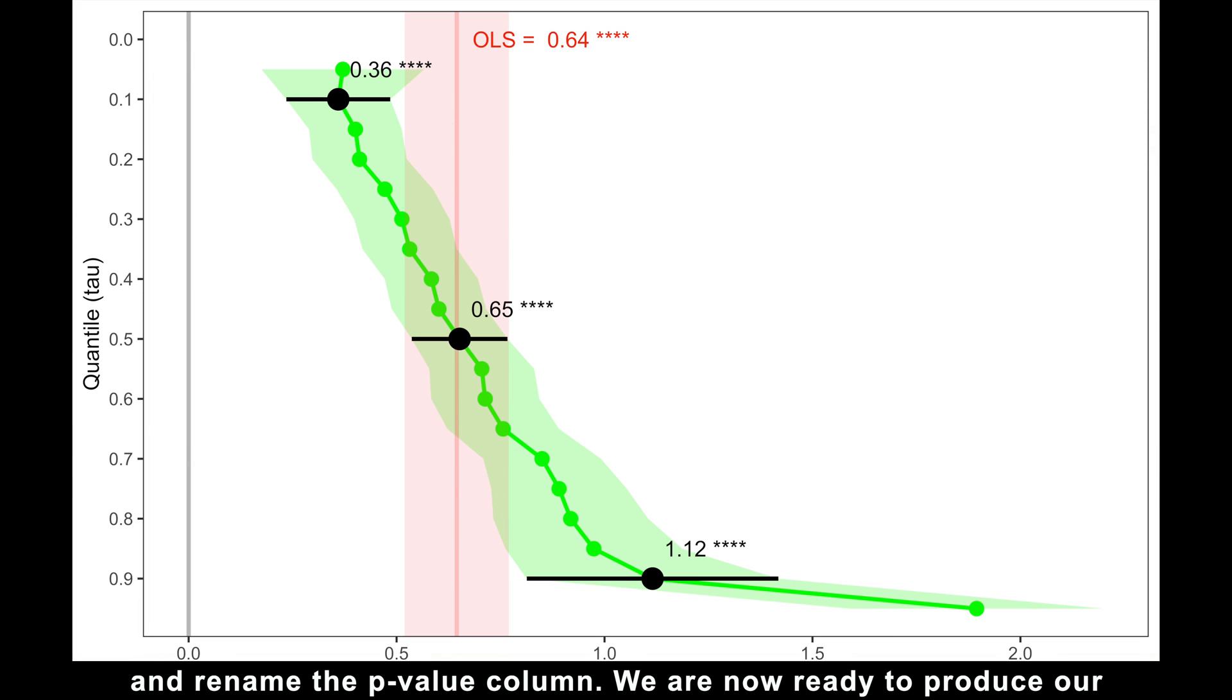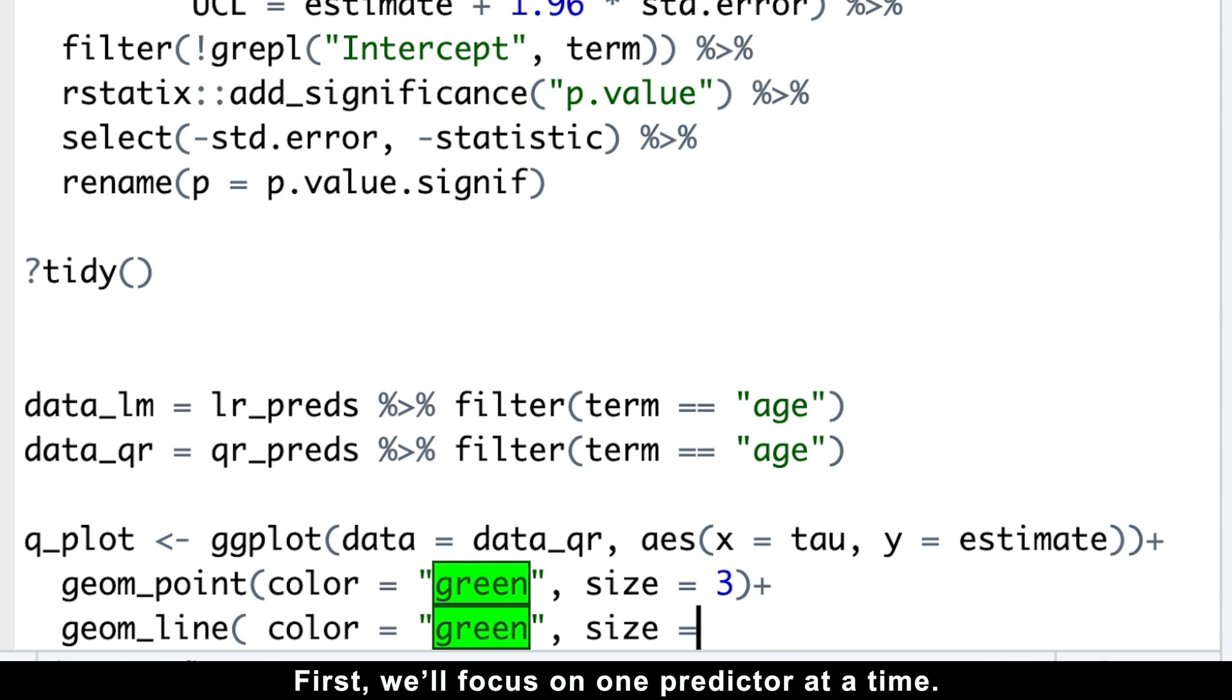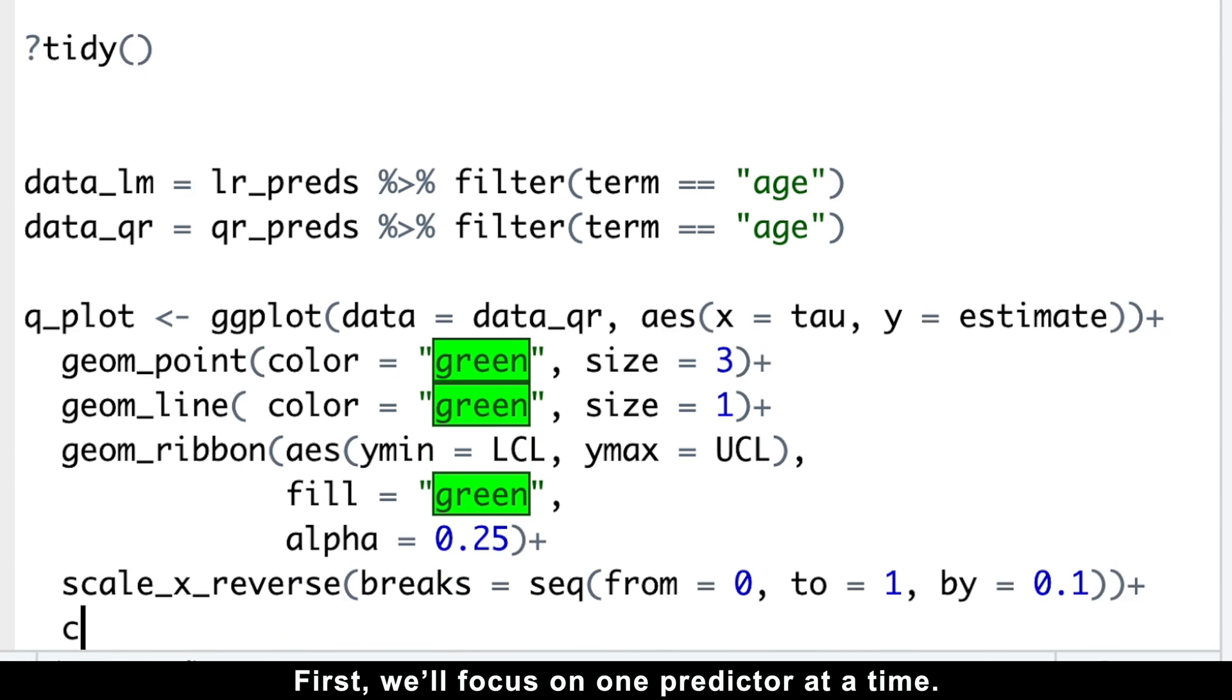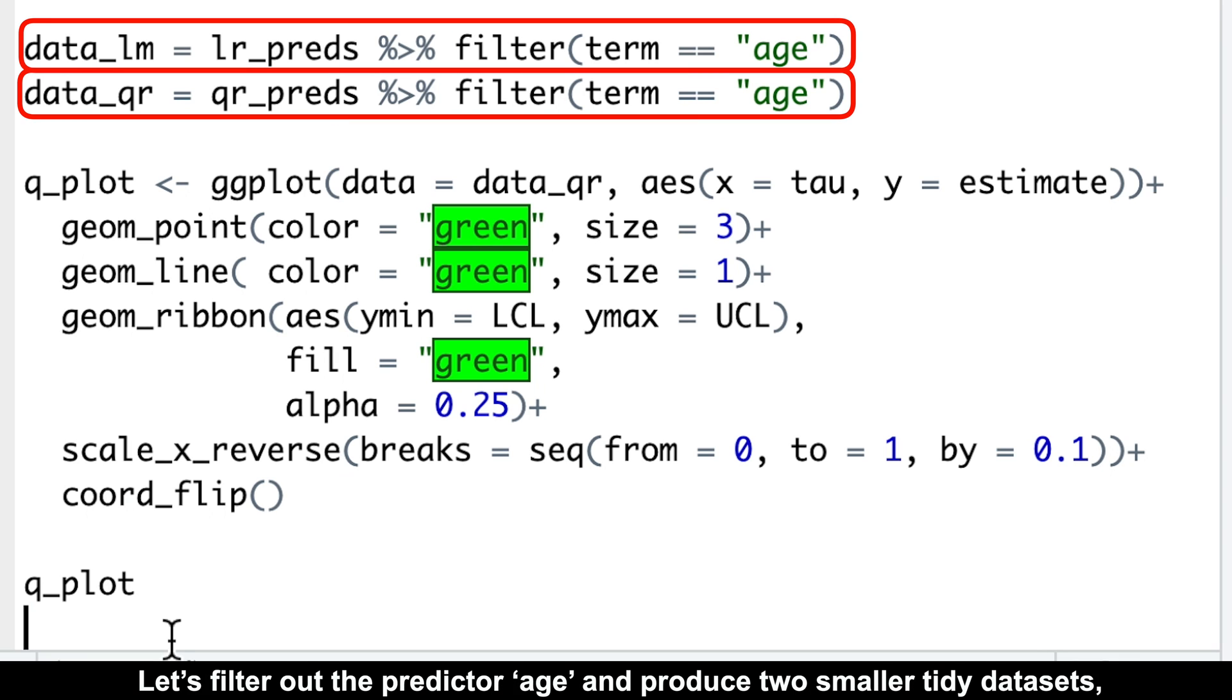We are now ready to produce our beautiful and informative plot. To ensure maximum clarity and learning, let's program that fancy plot step by step. First, we'll focus on one predictor at a time. Let's filter out the predictor age and produce two smaller tidy datasets, one for linear regression and another for quantile regression.